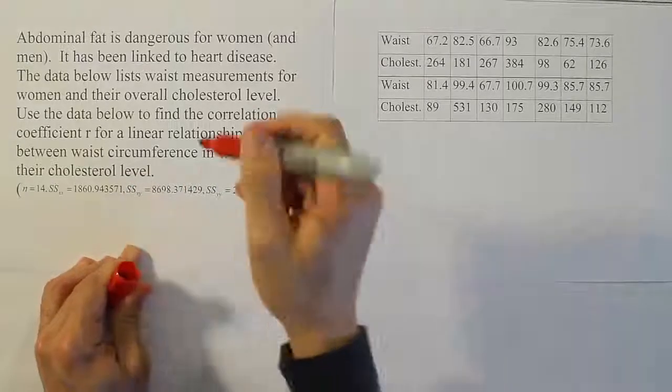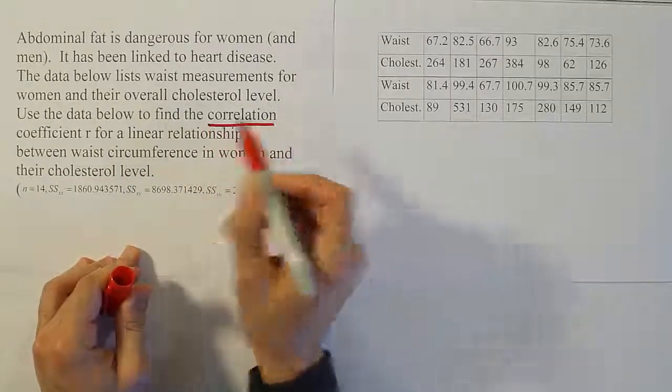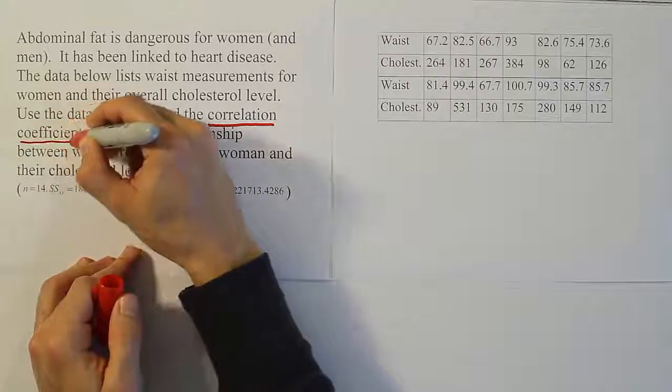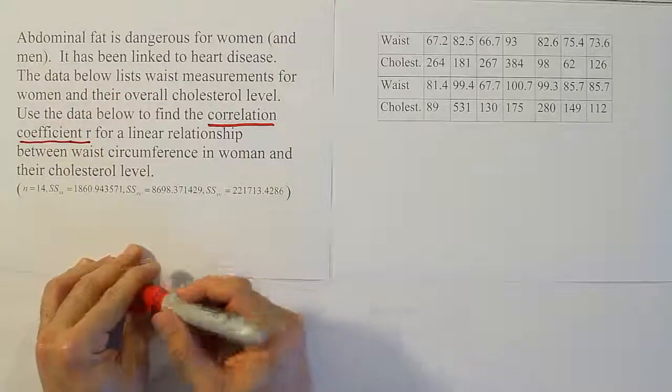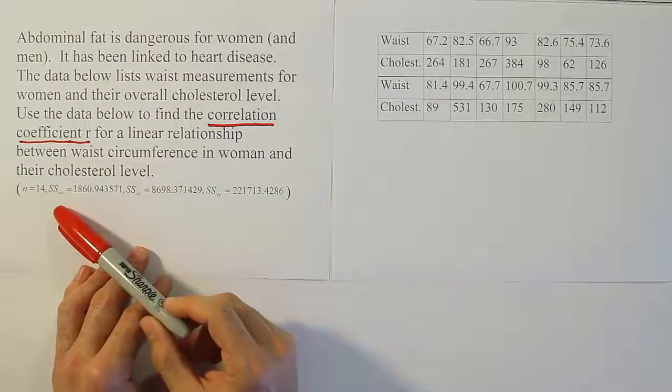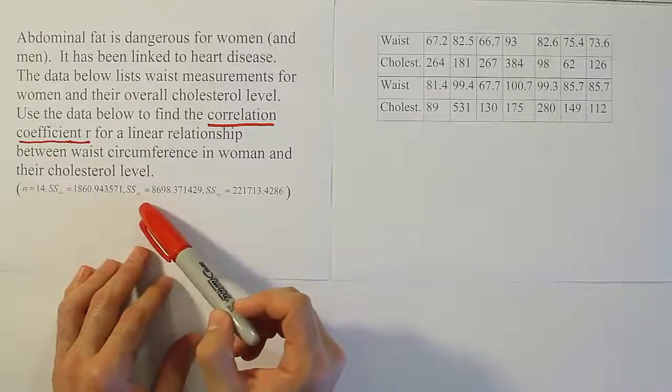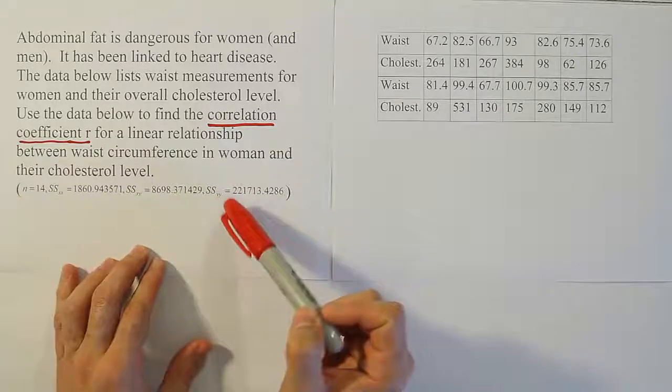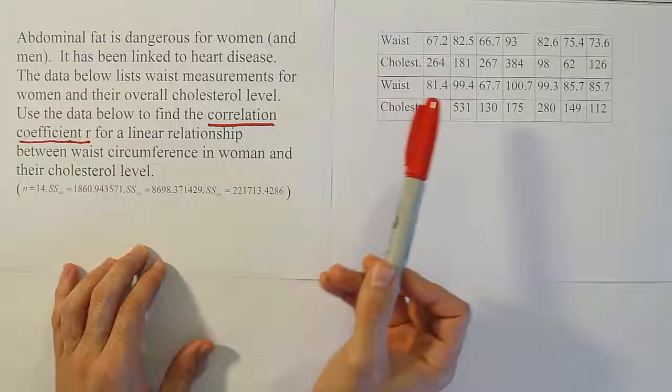So we're looking for the correlation coefficient, and that's the variable R. They give us something really helpful to calculate R - they give us the summary data values. So we have SSXX, SSXY, and SSYY. That's the summary data values for this set of data.